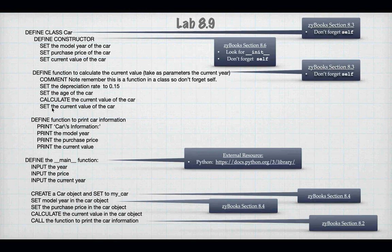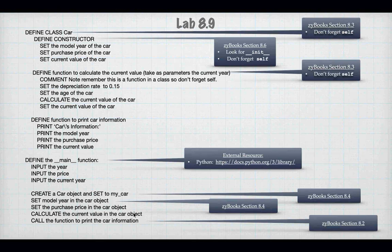Now I'm going to use that class to define a couple of objects. The user is going to tell me the year, the price, and the current year. I'm going to create a car object assigned to a variable called `my_car`, set the model year and purchase price, calculate the current value of the car, and then print that car out. This basically uses pretty much everything we've done in this lecture.